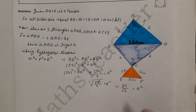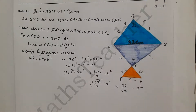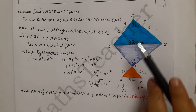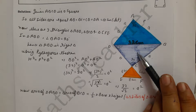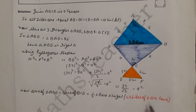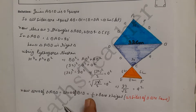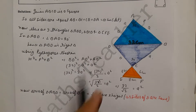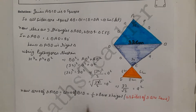Now we need to find the areas of the 3 shaded regions. Triangles ABD and BCD have the same area because they are congruent right-angled triangles. Area of triangle ABD = Area of triangle BCD = half × base × height.